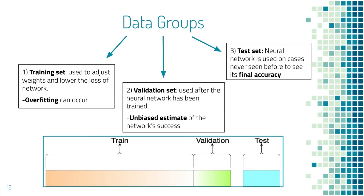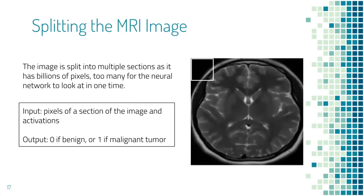After the neural network has been trained, it is given the validation images to see how the network performs with new images, giving an unbiased estimate of success. Finally, the network is used on test cases it has never seen before to see its final accuracy. The MRI scan of the area being studied is split into multiple slides, because the image contains billions of pixels and the neural network isn't trained to look at that large of an area. The network takes a section of the image as input along with the activations of each pixel based on the grayscale color, and outputs a zero if it estimates a benign tumor is present or a one if it is malignant.